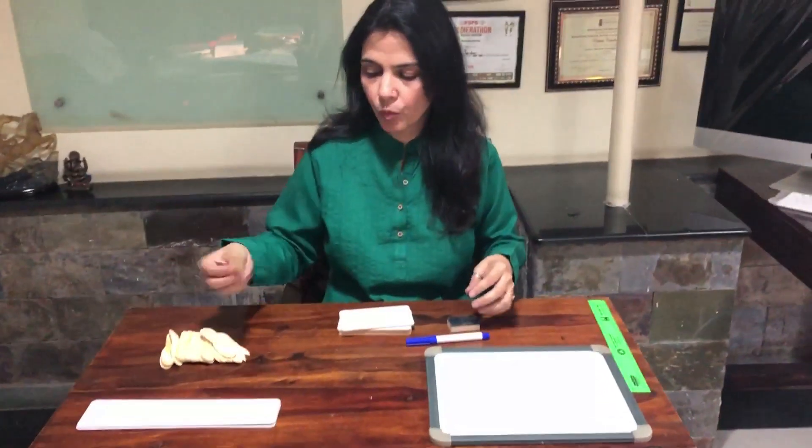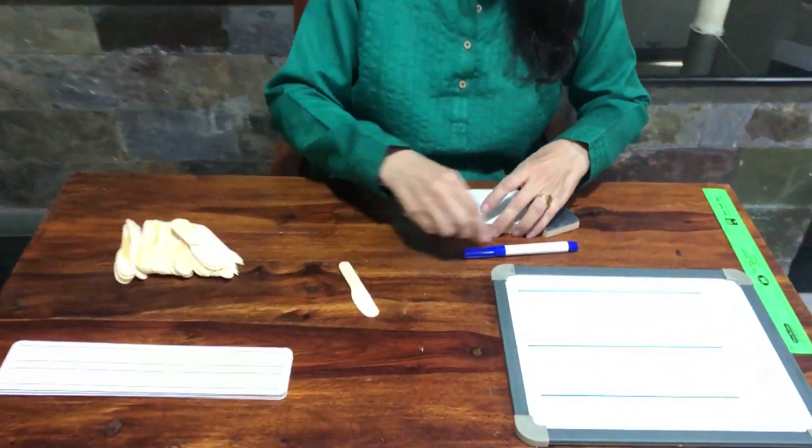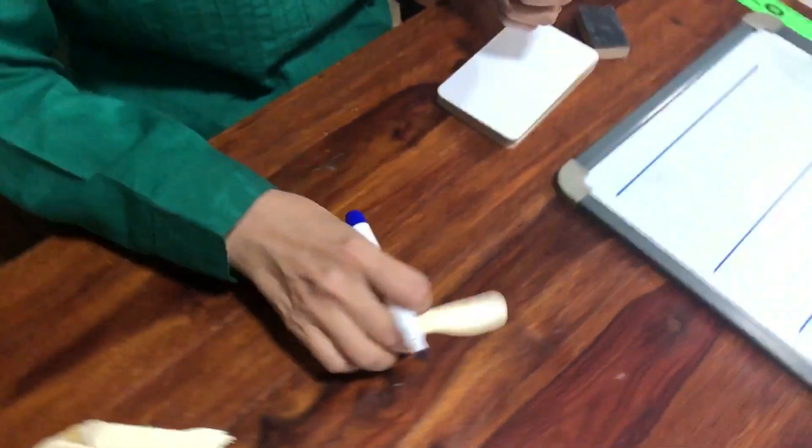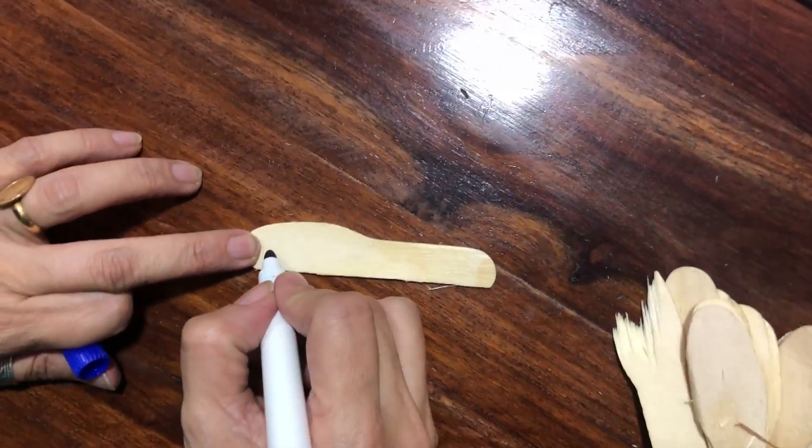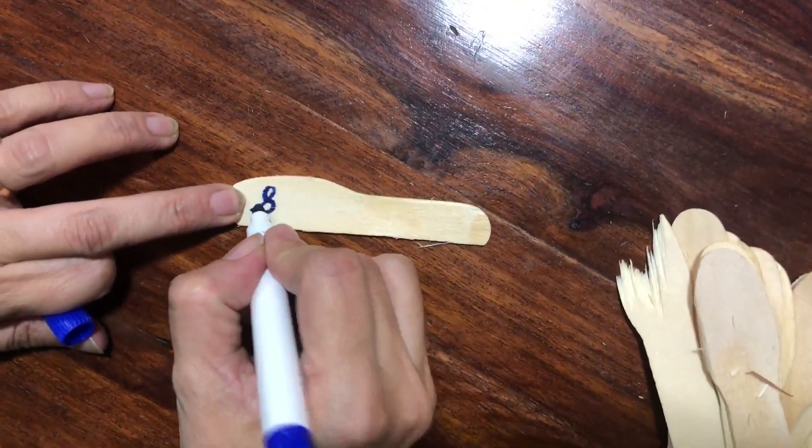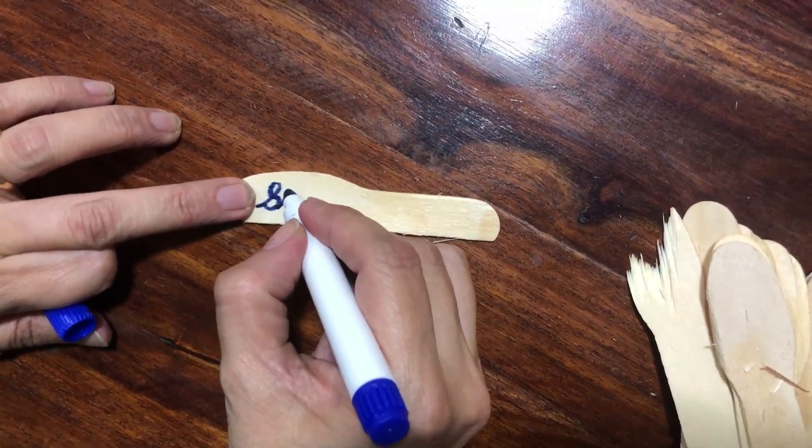Now I am going to show you how we can use them. These are just ice cream sticks, wooden sticks available in the market. So for example, if we are doing dictation of sight words, I am going to give a word 'said' and the child will write, can use a felt pen, a marker like this.